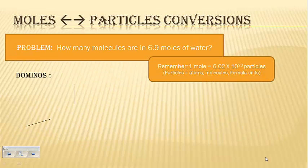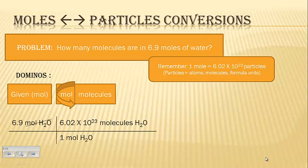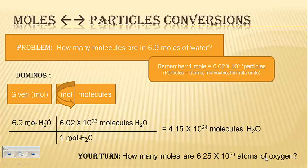Now we're going to convert between moles and particles. So how many molecules are in 6.9 moles of water? Remember that one mole equals 6.02 times 10 to the 23rd particles. So you start with your dominoes. You have a given domino, and that is in moles. Somehow, I have to get from moles to molecules. So the next domino, mole to molecules, turn it counterclockwise, plug in the numbers, cancel out the units, plug it into my calculator using parentheses so I can ensure that I get the correct answer, and I end up with 4.15 times 10 to the 24th molecules of water. Now using this concept, it is your turn. Now I want you to calculate how many moles are in 6.25 times 10 to the 23rd atoms of oxygen.